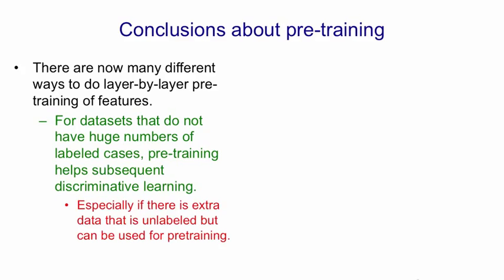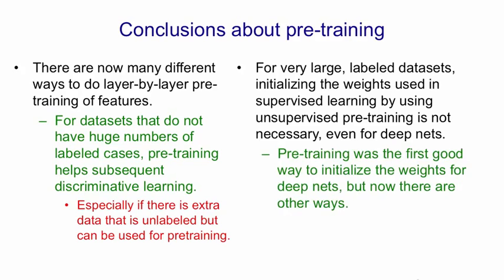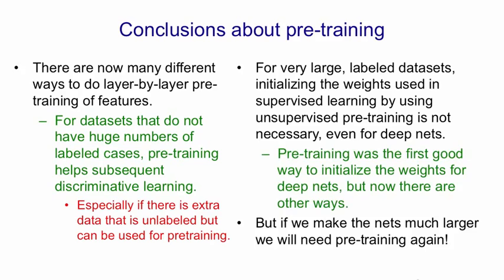Pre-training is especially useful if we have a lot of unlabelled data, so that it can do a very good job of discovering interesting features using a lot of data. For very large labelled data sets, however, initialising the weights for supervised learning by using unsupervised pre-training is not necessary, even if the nets are deep. Pre-training was the first good way to initialise the weights for deep nets, but now we have lots of other ways. However, even if we have a lot of labels, if we make the nets much larger again, we'll need pre-training again.